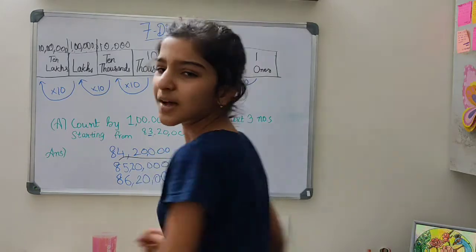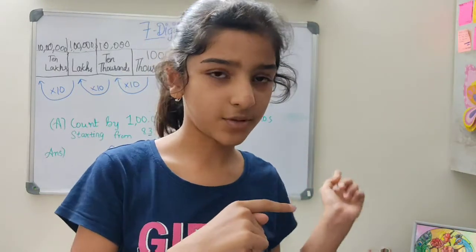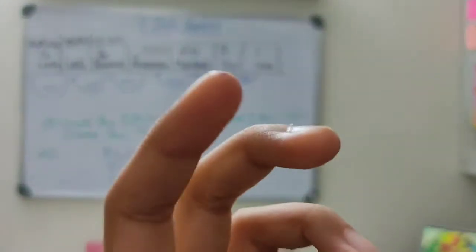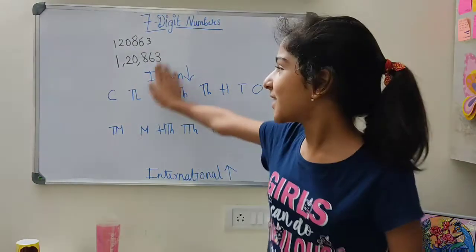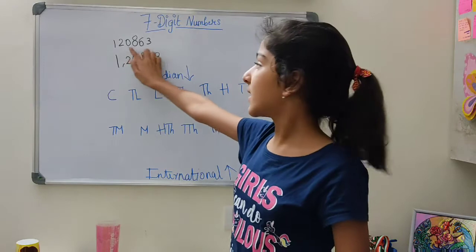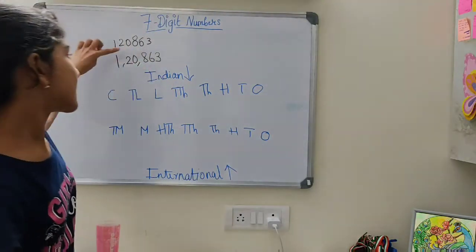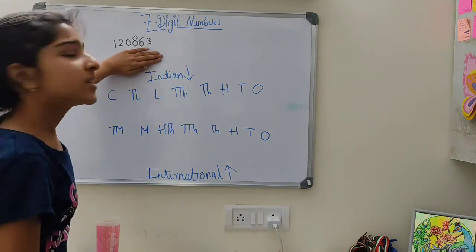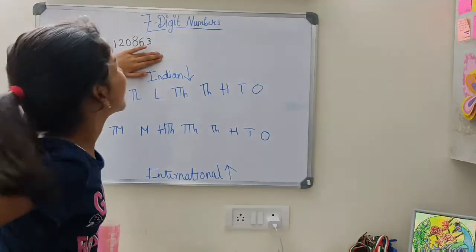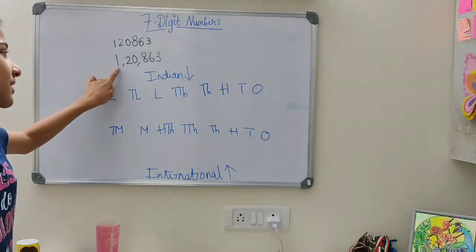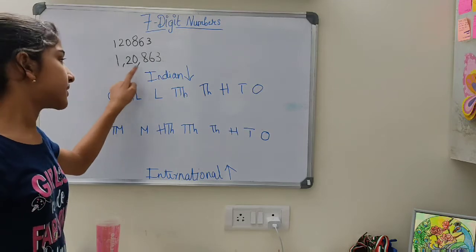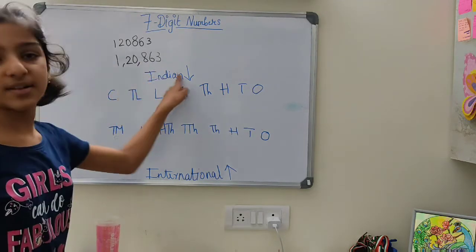Let's take an example. I have the number 120,863. Without periods it is hard to read, but with the comma placed correctly you can easily see that this is a lakh period, so you can say one lakh 20,863. Wasn't that easy?